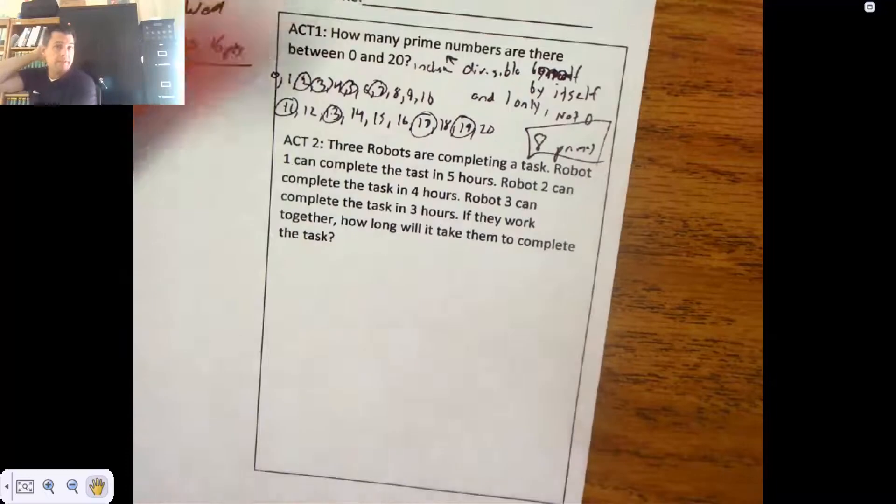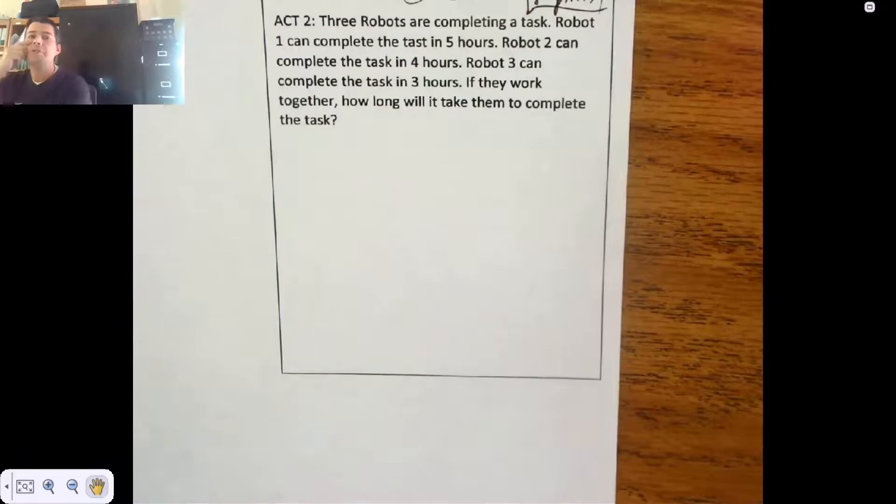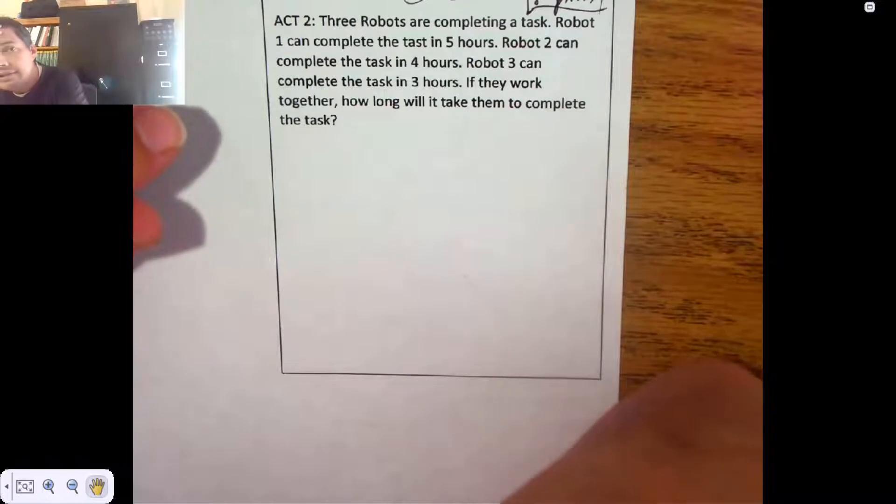All right, ACT two, three robots are completing a task. Robot one can complete the task in five hours. Robot two can complete it in four. Robot three in three. If they work together, how long will it take them to complete the task?